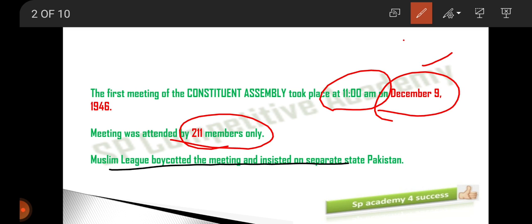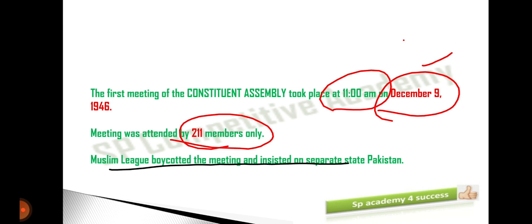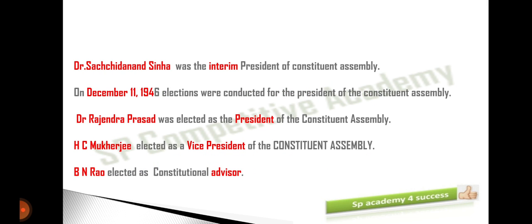So the first meeting was conducted without the Muslim League members and most princely state members. The Constituent Assembly began to function with non-Muslim League members. 211 members attended on December 9th, 1946. If you can remember the time, that's better — if not, don't struggle for it.